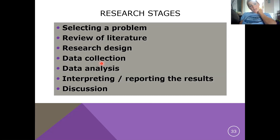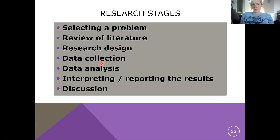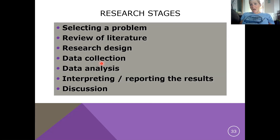When we think about research stages: select a problem — consider what it is you're interested in understanding; review the literature — what has already been done in this area of whatever topic it is, do some background research; then design how you want to run your experiment and provide insight to this topic in an area not already covered; then collect your data, analyze your data, interpret and report your results, and discuss why you think you found what you found.